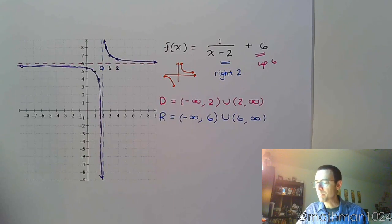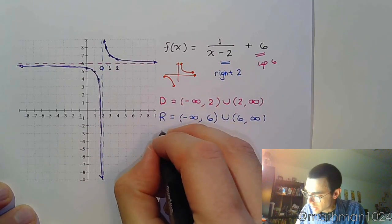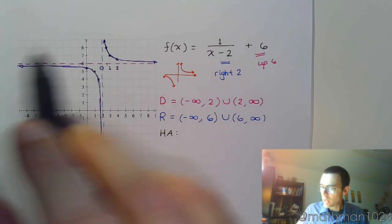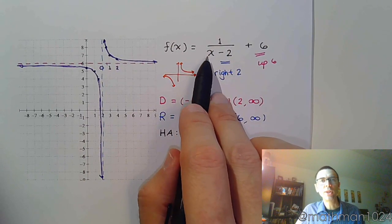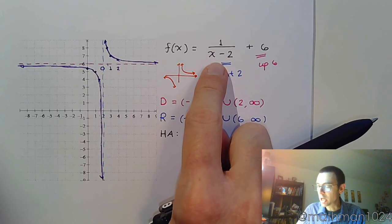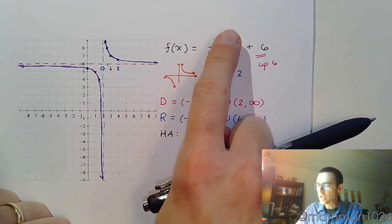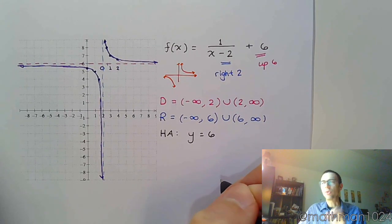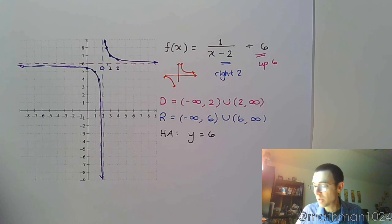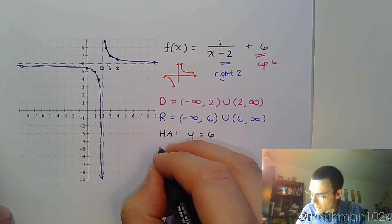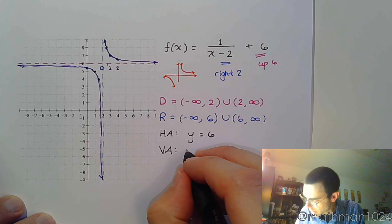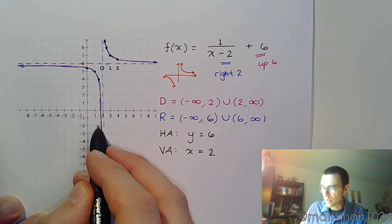Now the asymptotes — we can get them from the graph or from the function; it's all connected. The horizontal asymptote describes end behavior: as x goes toward negative or positive infinity, you have 1 over a really large number, which goes to 0, and you're left with just positive 6. So the horizontal asymptote is y equals 6. The vertical asymptote occurs whenever the denominator equals 0 — the denominator equals 0 when x equals 2, giving us the vertical asymptote at x equals 2.